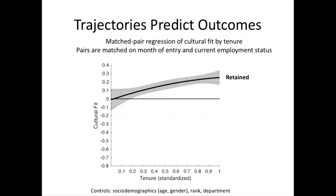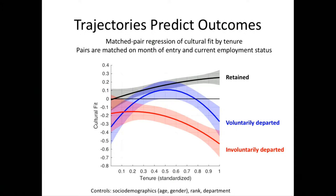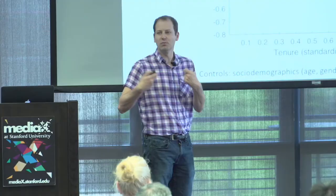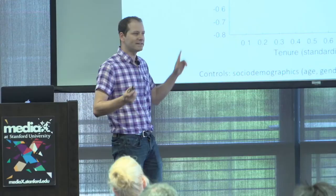We find very different patterns in different people's enculturation trajectories as a function of their ultimate outcomes. People who are retained generally show a gradual increase in cultural fit. People who involuntarily departed demonstrate a decline in cultural fit. But most interestingly, people who voluntarily departed demonstrate the capacity to adapt — but at roughly the half-life of their tenure in the organization, they essentially say to themselves, 'this is a kumbaya organization, but I'm going to start dropping f-bombs in my emails anyway' — and that for us is an indication of their declining attachment and their unwillingness to adhere to normative conventions, which portends their voluntary departure.